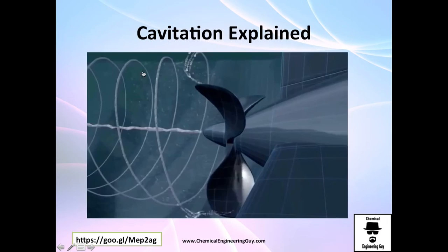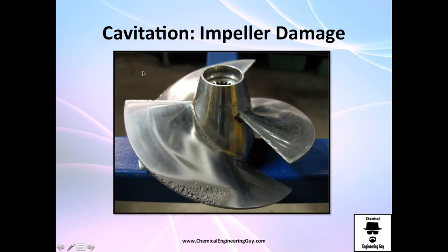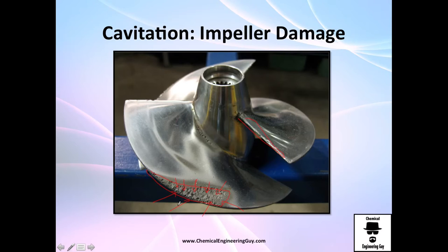Just keep in mind: these are water vapor bubbles, not air. Look at what cavitation does to the impeller — you probably didn't think little bubbles could cause this level of damage. But as you can see, this erosion is not from rust or salt water — this is purely due to cavitation.